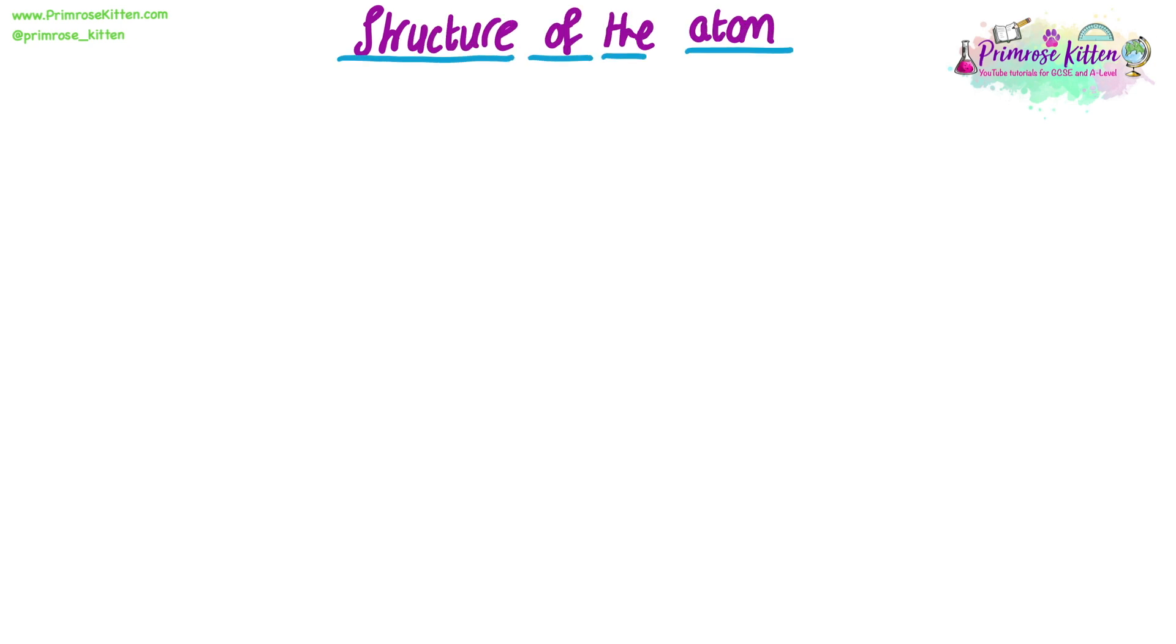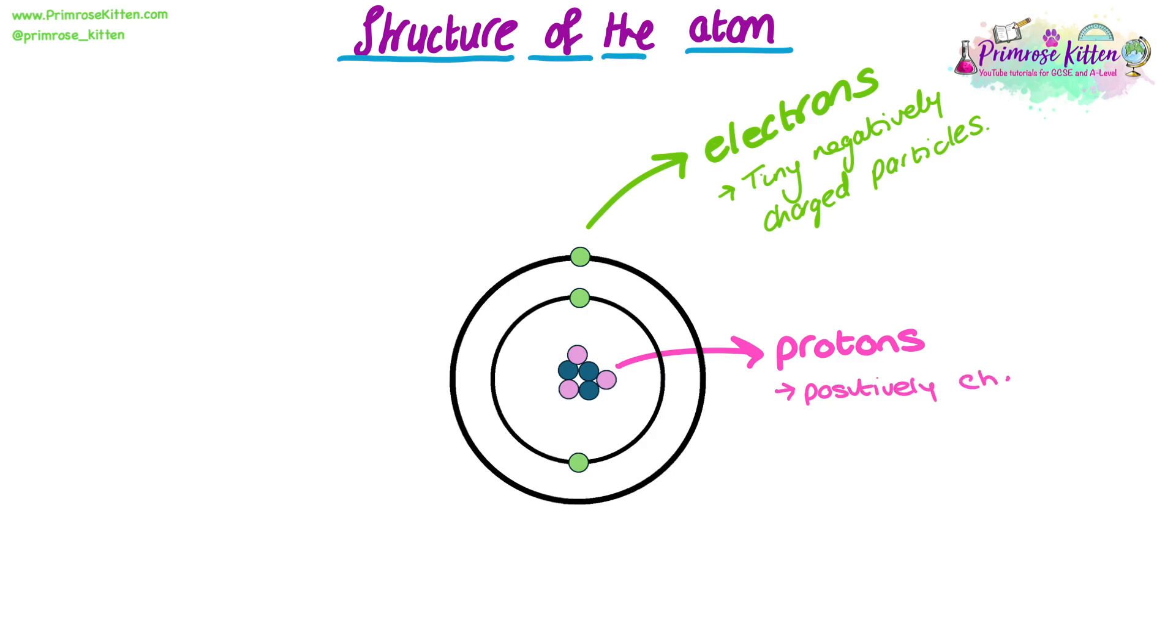So here we're going to look at the structure of the atom. Atoms are made up of three subatomic particles. On the outer shells or outer energy levels are the electrons. Electrons are tiny, negatively charged particles. The next subatomic particle we'll need to look at are the protons. Protons are positively charged subatomic particles and these are found in the centre of the atom within the nucleus. The third and final subatomic particle are the neutrons. Neutrons are neutral particles. This means they have no charge and they are also found in the nucleus alongside the protons.